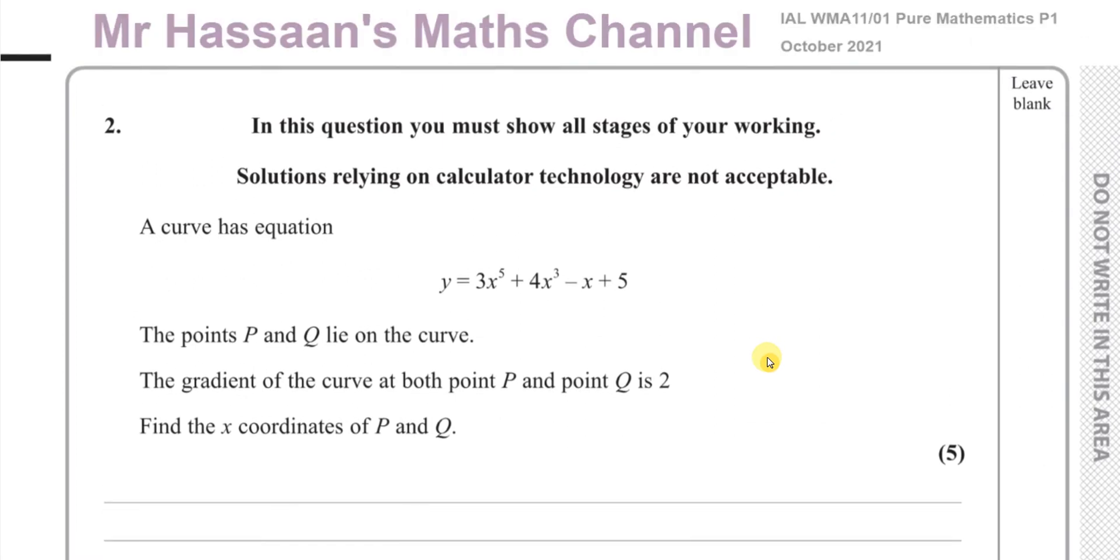So what we need to do here is find the gradient function and equate that to 2, because the gradient of this curve equals 2 at those two points. If we find dy/dx and equate that to 2, we will find the x values of points P and Q. Now it says find the x coordinates of P and Q, it doesn't say find the coordinates, so read the question very carefully because a lot of students would waste time by finding the x and y coordinates unnecessarily. You have a limited time in these papers and it is quite tight, so it's best to read the question carefully to save time and not do things which are not being asked for.